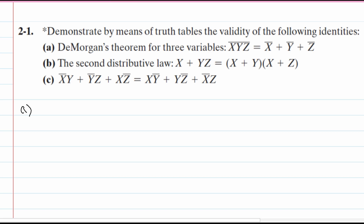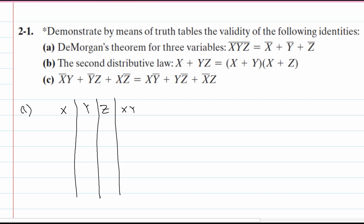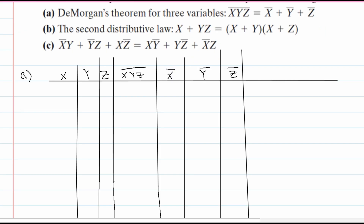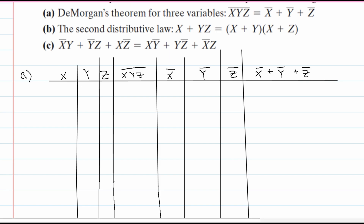We're going to need a table with columns for x, y, and z. Then in the same table, we are going to have x, y, z underneath a bar — that stands for NOT. Then we are going to have x-not, y-not, z-not in their own separate columns. And then in our last column, we are going to have x-not plus y-not plus z-not. So we have all possible combinations from these three variables.